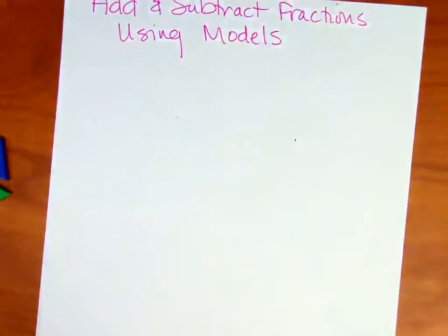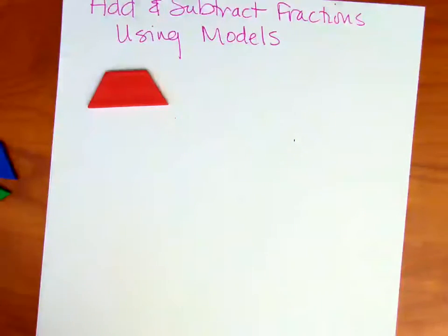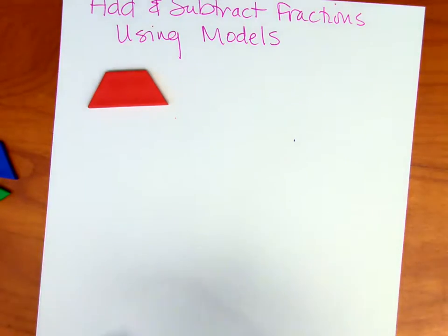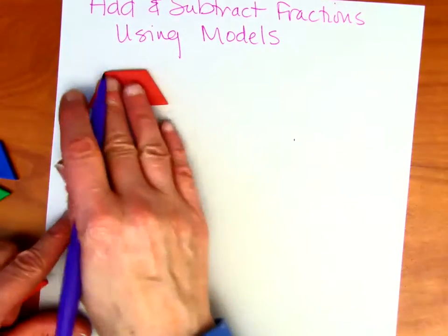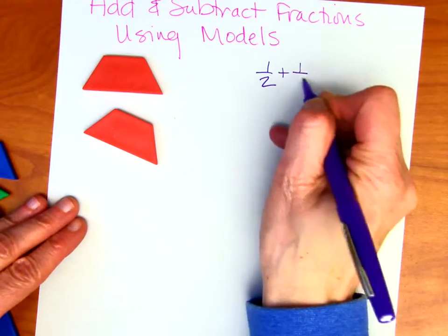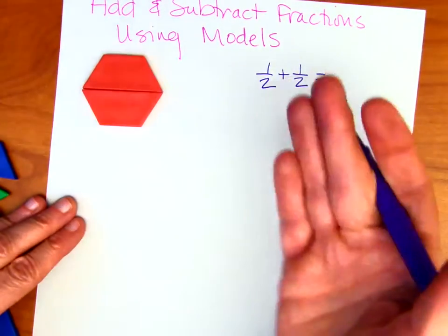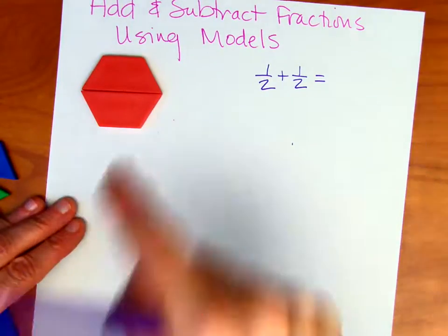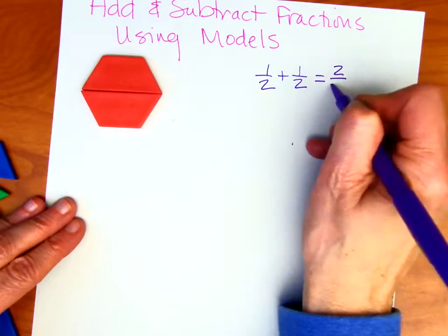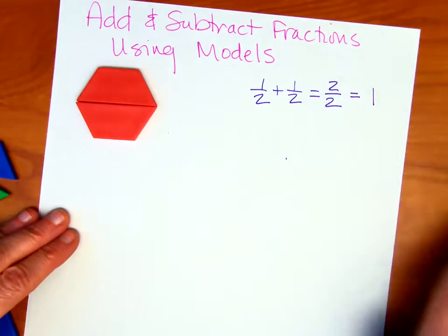Let's go ahead and start with our red trapezoid — that's one-half. I'm going to present the model and then write out the equation. First we're going to start with one-half, and we're going to add to that one-half. So one-half plus one-half. Likely you're going to know that's going to equal one whole, but before we reduce it, what we really have is two one-half pieces, and we'd write that as two-halves. We know that when we reduce that, it becomes one.